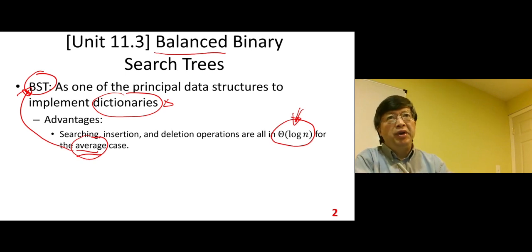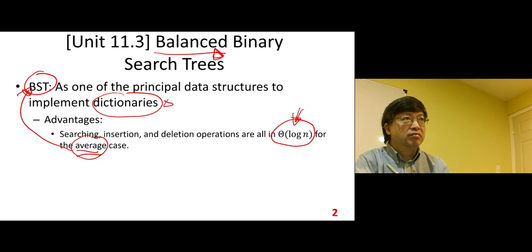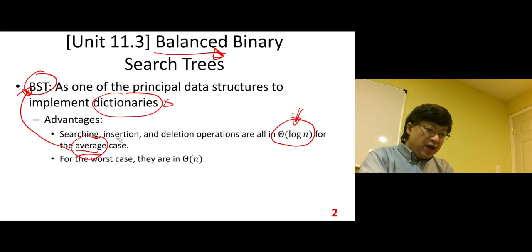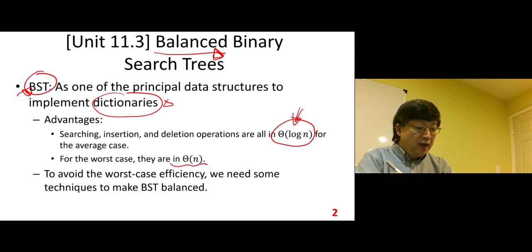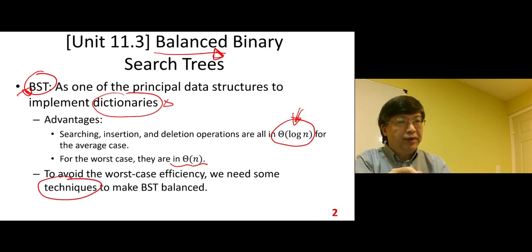If we can make our BST balanced, then it won't be the average case, it will be the worst case. Worst case, average case, best case, all the same because it is balanced. To avoid the worst case efficiency, we need some techniques to make BST balanced.